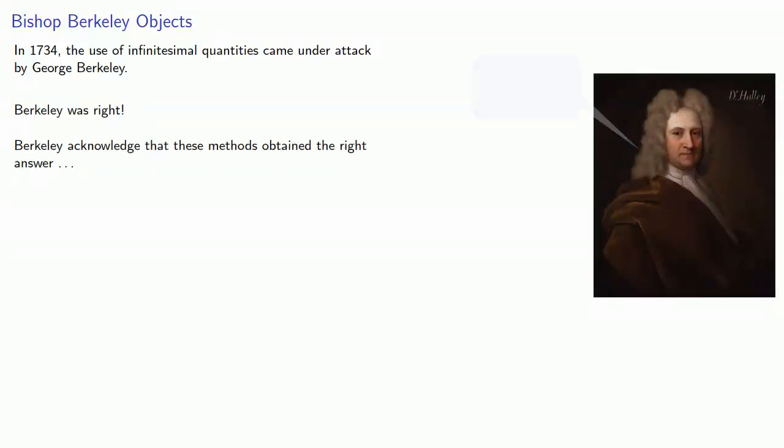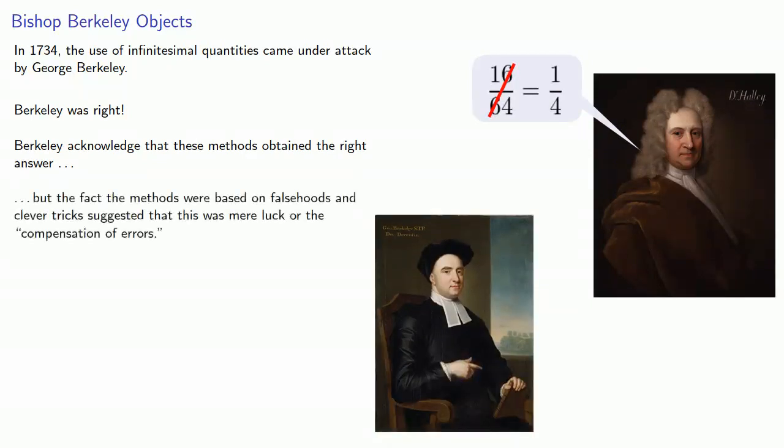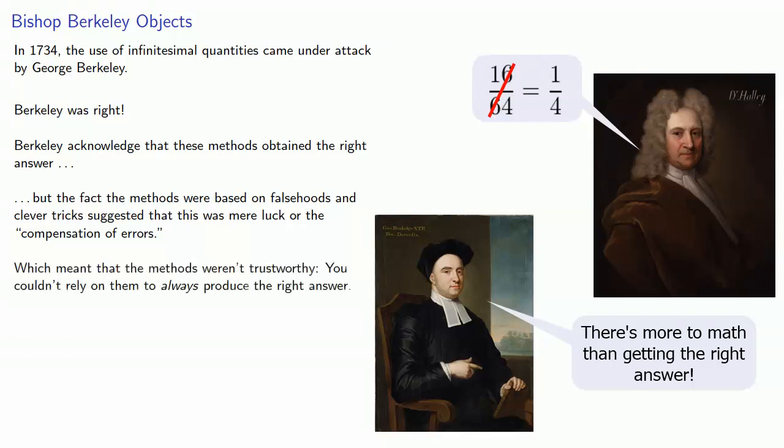As it turns out, Barclay was right. Barclay acknowledged that these methods obtained the right answer, but the fact the methods were based on falsehoods and clever tricks suggested that this was mere luck or perhaps the compensation of errors. Ultimately, the problem is that the methods weren't trustworthy. You couldn't rely on them to always produce the right answers.